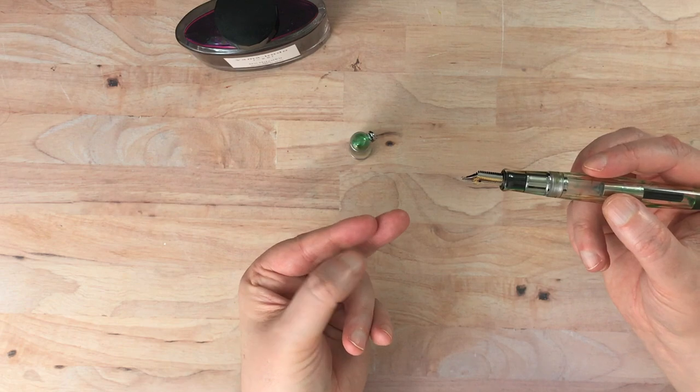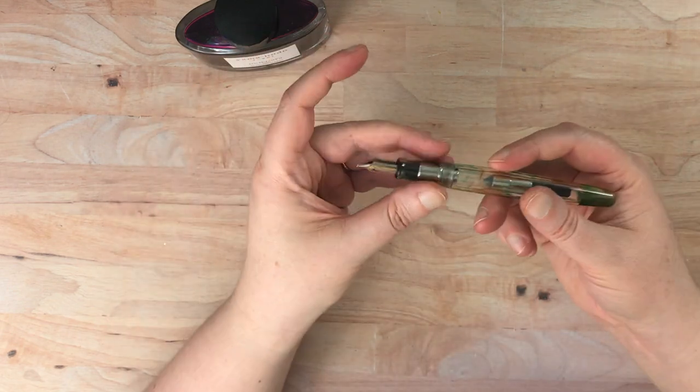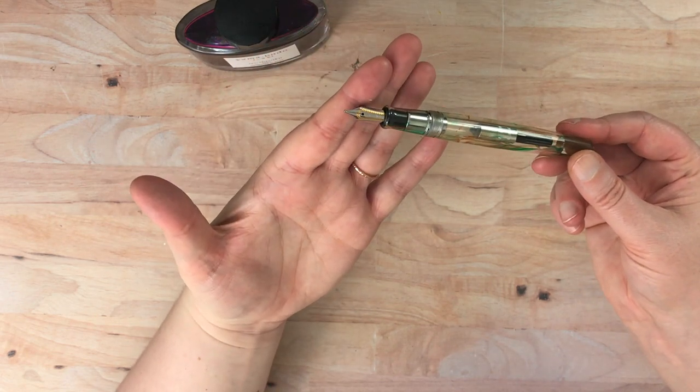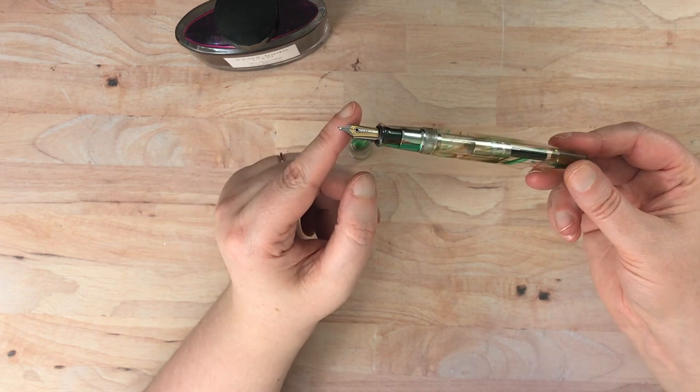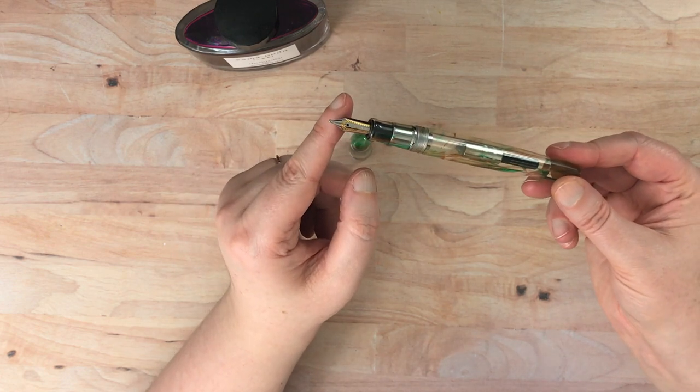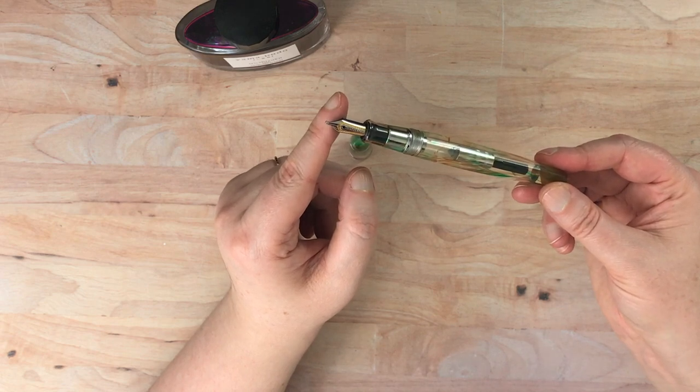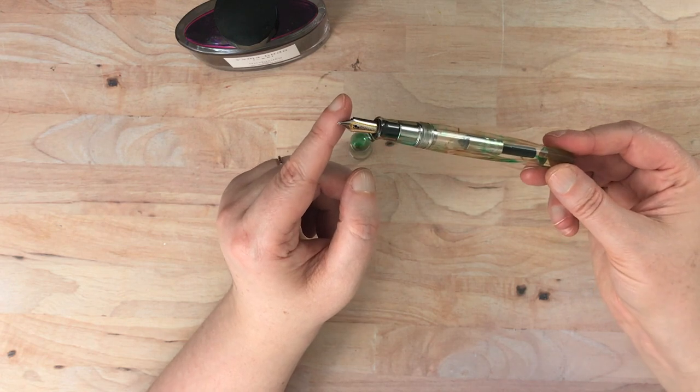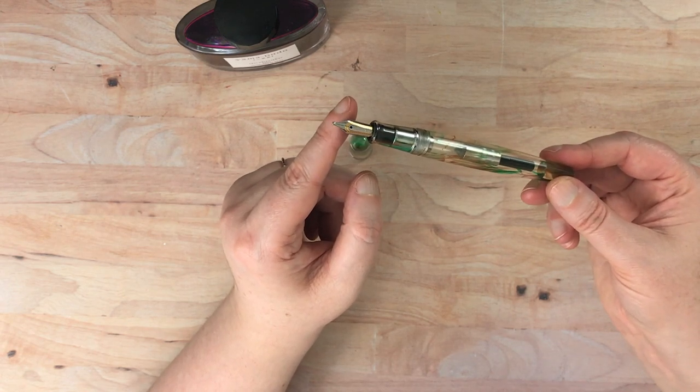So Sailor's, and now I guess Tatchia's, their music nib is not your typical music nib with the two or the three tines. So the other music nib that I have from Platinum, I believe it's Platinum, it has three tines. But it still kind of writes like a stub, I would say.